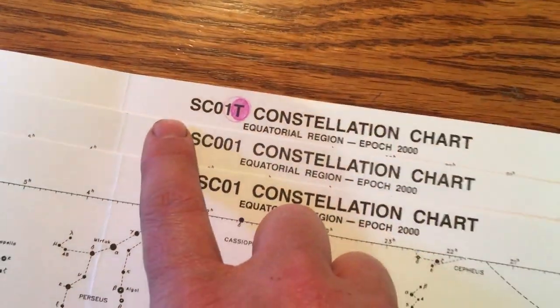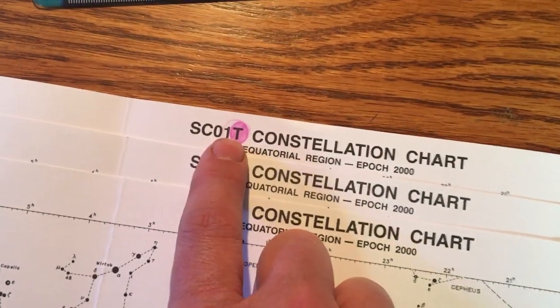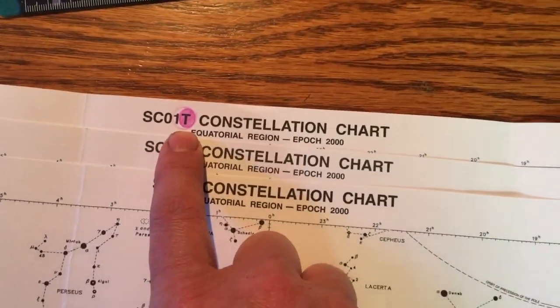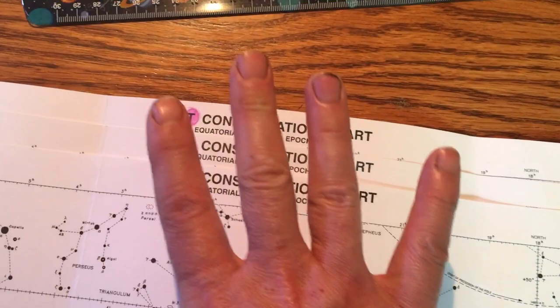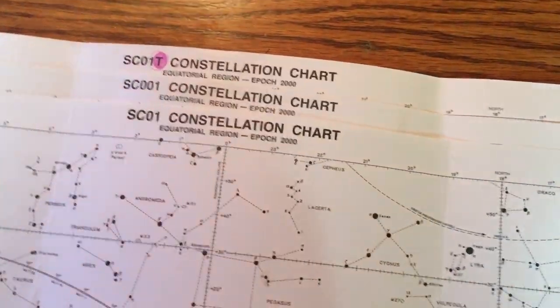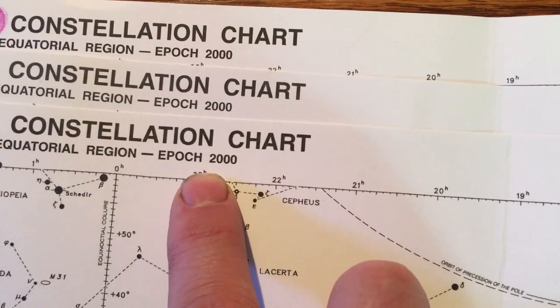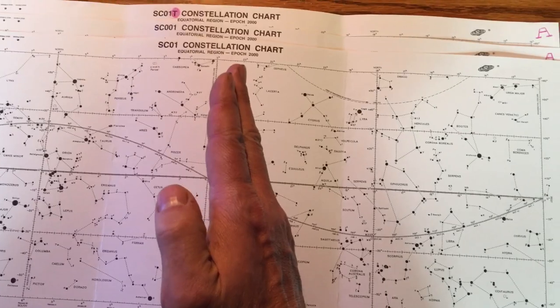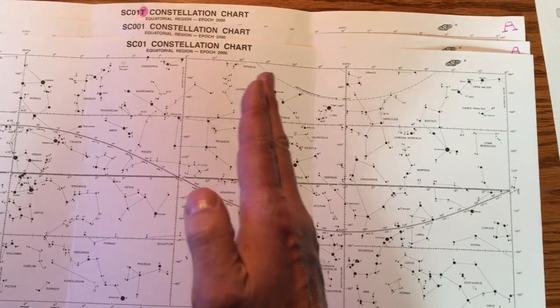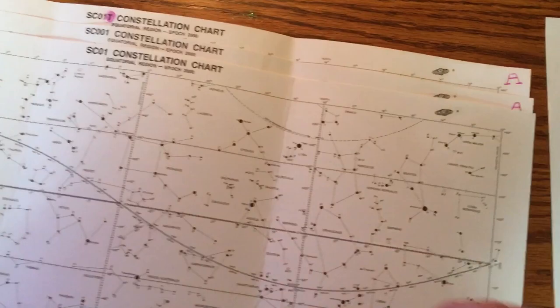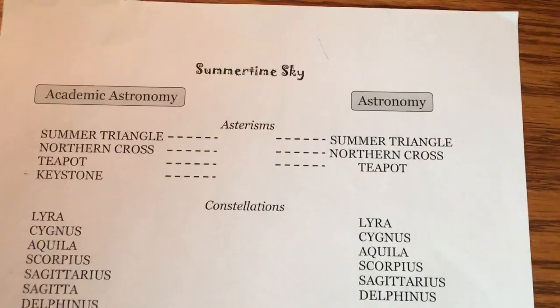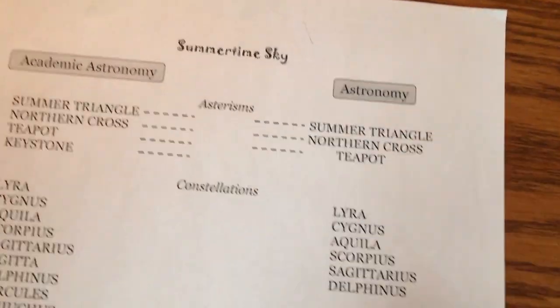Some of you might even be using the SC004T because SC01 Publishing had some crazy stuff going on. They were actually out of the 1Ts. So if you are using the 4T, it's almost the same. But because it's set for the year 0 AD rather than 2000, everything on the chart is just going to be shifted ever so slightly one way or the other. But everything is still here.